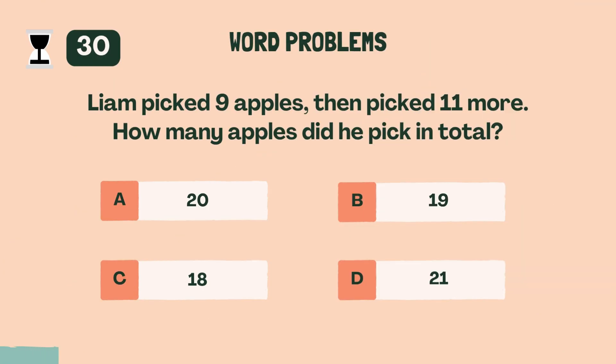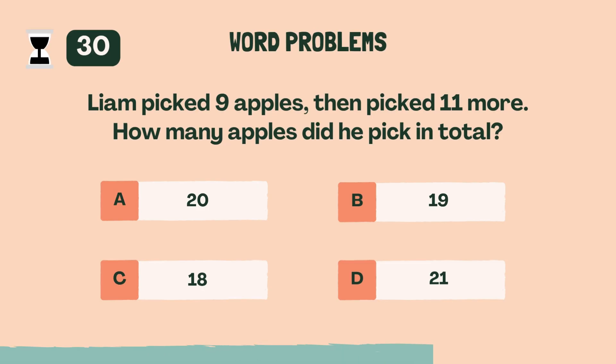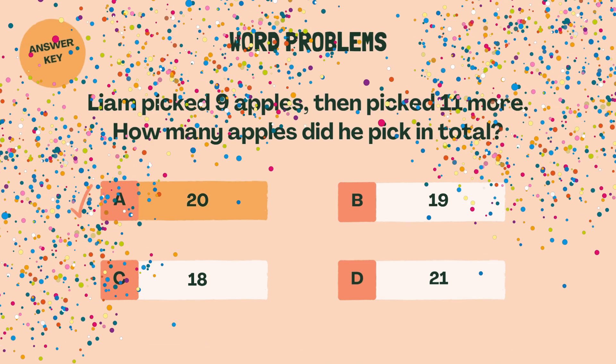Liam picked 9 apples, then picked 11 more. How many apples did he pick in total? A, 20.